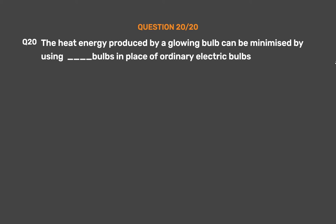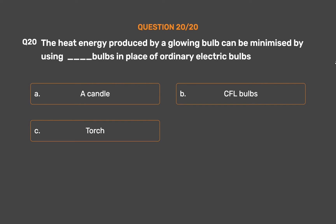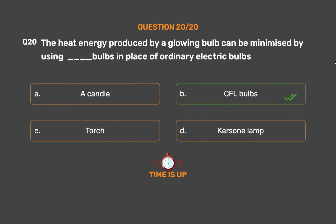Question number 20. The heat energy produced by a glowing bulb can be minimized by using blank bulbs in place of ordinary electric bulbs. Option A: A candle. Option B: CFL bulbs. Option C: Torch. Option D: Care Sony lamp. The correct answer is Option B: CFL bulbs.